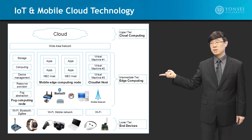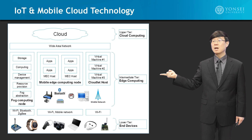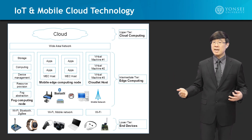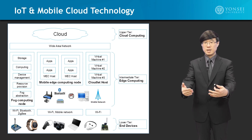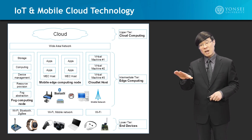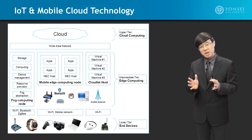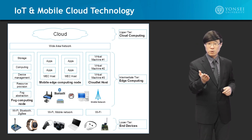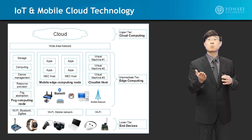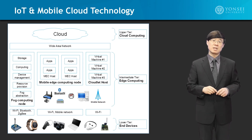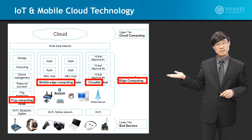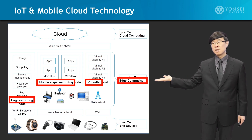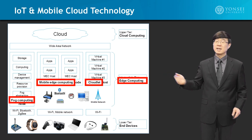Then we will go into the edge computing techniques, which are the cutting edge in cloud computing systems. This is taking the cloud computing systems directly near to you, such that the overall traffic load in the backbone network is minimized, as well as your service delivery of cloud services is provided in a minimal amount of time — a win-win situation, depending on these techniques in terms of fog computing, mobile edge computing, and cloudlet.